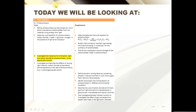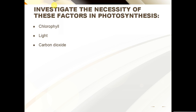What is up guys, welcome to another episode of IGCSE Biology Revision. Today we're going to be finishing off our previous topic, plant nutrition. We're going to be looking at how to experimentally determine the necessity of three factors in photosynthesis: chlorophyll, light, and carbon dioxide.